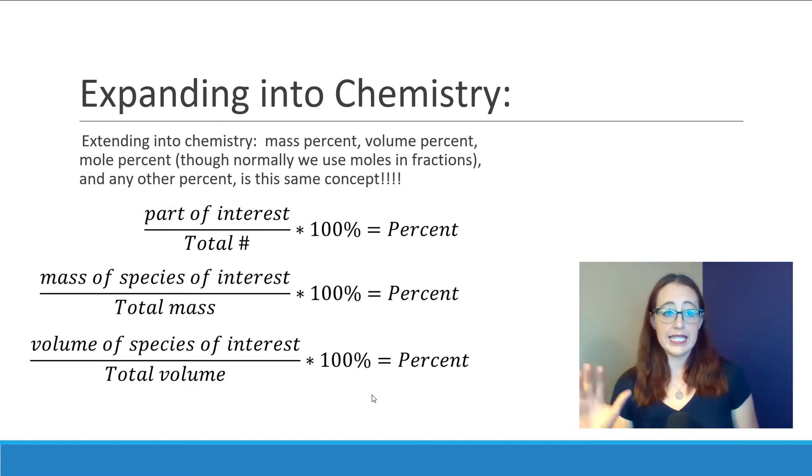Now, let's extend this into chemistry. When we extend the percents into chemistry, we are often talking about things like mass percents and volume percents, but the concept is exactly the same. It's the mass of the thing that we care about over the total mass times 100 percent. Or perhaps it's the volume that we care about, and so we can talk about the volume of the thing we care about over the volume total times 100 percent. Theoretically, we can do this with moles as well, though generally we do tend to keep moles in fractions, but it's the same idea.